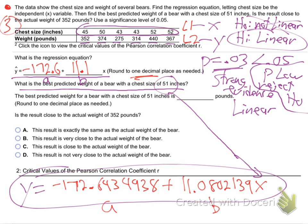This is a relationship between X and Y, which means you can plug in a chest size — those are X's — and plug it in, multiply, you know, negative 172.6 plus 11.1X. But you're going to have to use the ones with more accuracy. And that'll give you a Y. You can plug in a chest size and calculate a weight. Plug in an X and get a Y.